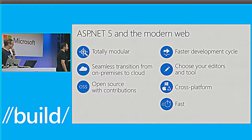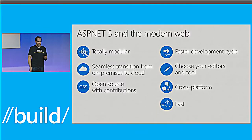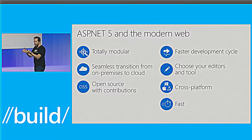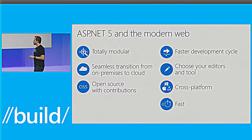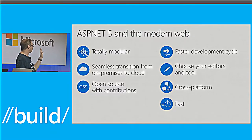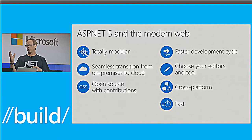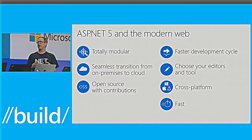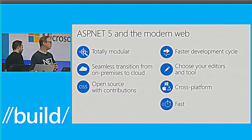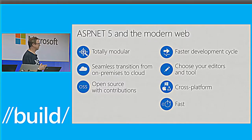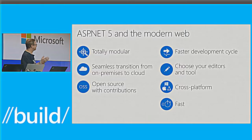ASP.NET 5 was the original name, because 5 is bigger than 4.6. But that implies more functionality in a way we didn't intend — it has different functionality, pared down to its core. It is totally modular but doesn't have some of the weight of the full framework. Things like SignalR and WebPages are coming in ASP.NET Core but will come a little bit after RTM. So we renamed from ASP.NET 5 to ASP.NET Core 1, trying to imply this is not 'the next thing with more stuff' — it's actually a new thing. In 1.1 or 1.2 we'll start getting some of that parity back.